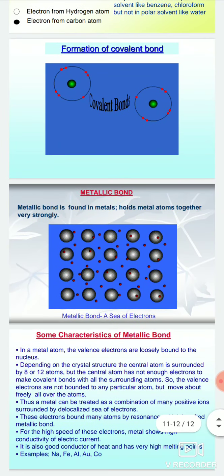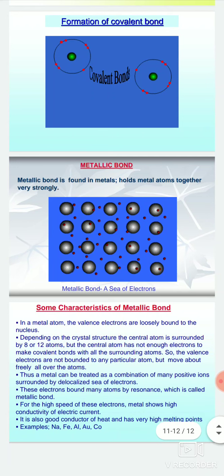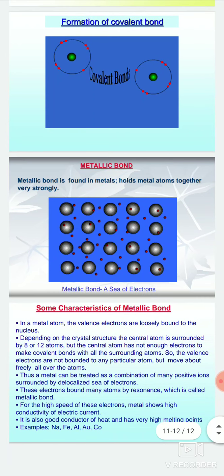Metallic bonds are found in metals. In metal atoms, the valence electrons are loosely bound to the nucleus. Depending on the crystal structure, the central atom is surrounded by 8 or 12 atoms. The central atom does not have enough electrons to make covalent bonds with all the surrounding atoms.